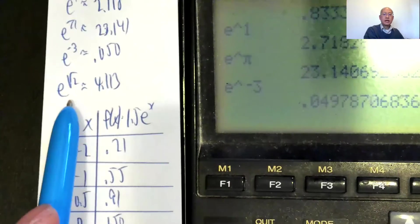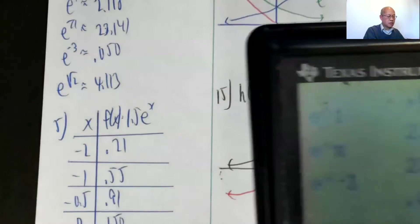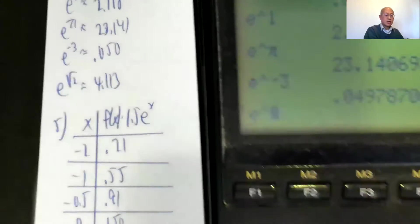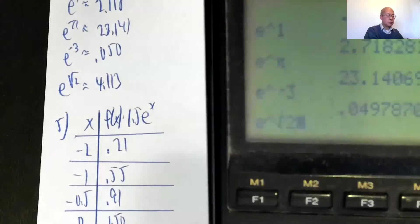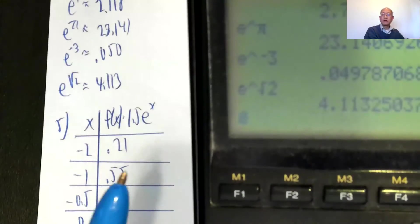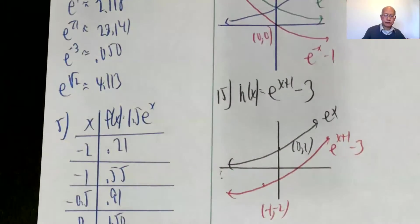And then e to the square root of 2, second function, e square root of 2, so hit my square root button, and 2. So e to the square root of 2, 4.1132, rounds up to 4.1133.